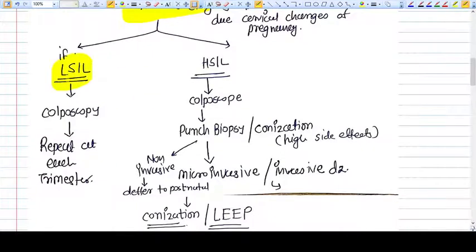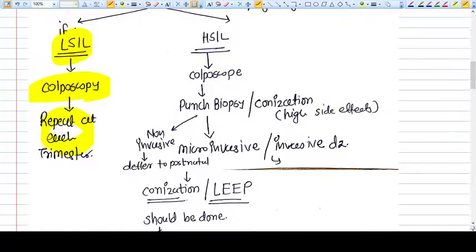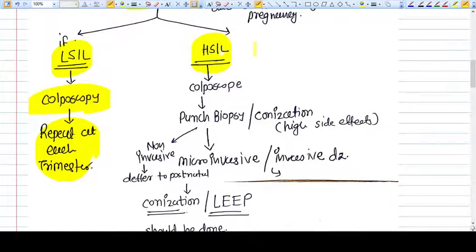Once on colposcopy and pap smear you identify the type of lesion, if it is LSIL (low grade lesion), you confirm it by colposcopy and repeat at every trimester.